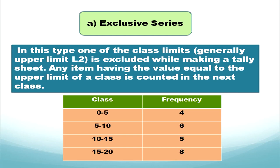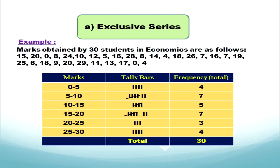For example: 0 to 5, 5 to 10, 10 to 15, 15 to 20. We observe that the upper limit of one class is the next lower limit, the class interval gap is the same, and the value of 5 will not be included in the first class while making the tally chart — it will be included in the next class.